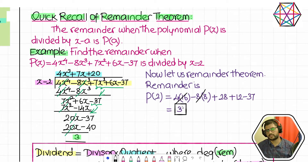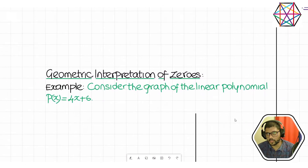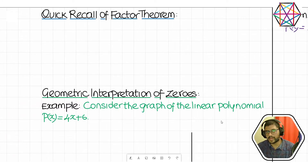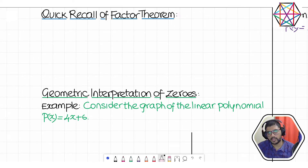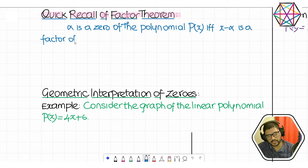Which is simpler? Of course the remainder theorem is far simpler — we don't have to do all that lengthy work. Similarly, we are going to quickly recall the factor theorem. Factor theorem is only a special case of the remainder theorem. The statement goes: alpha is a zero of the polynomial P(x) if and only if x minus alpha is a factor of P(x).